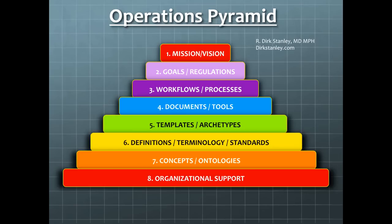First, I'd like to show this diagram that I call the operations pyramid. I created this diagram to help explain how predictable operations are created. Let's look at two important features of the diagram. At the top of the pyramid is the mission and vision. This is essential for setting the tone and direction of the organization. It creates goals and targets and is necessary to align the rest of the operations with successful outcomes.